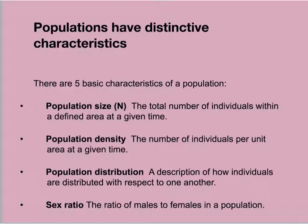Ecologists are also interested in how a population occupies its physical space — we call that population distribution, a description of how individuals are distributed with respect to one another. You'll see three different types of population distribution. Population sex ratio is the ratio of males to females. In most sexually reproducing species, the ratio is roughly 50-50, though sex ratios are far from equal in most species. In wasps, for example, there are as many as 20 females for every male. For humans, it's more like 51% female to 49% male.